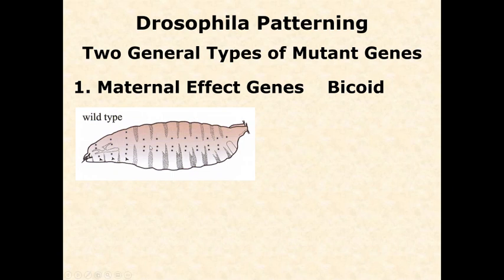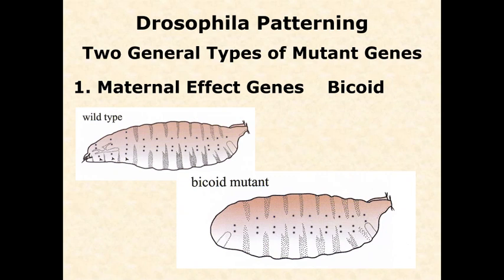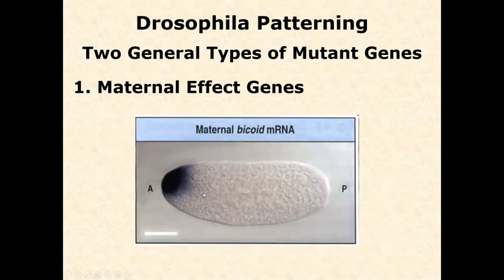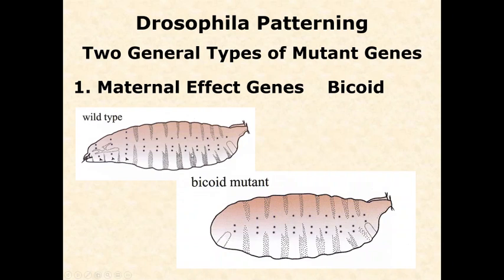If we mutate Bicoid — and this was done originally just by happenstance, they lucked into finding them — what they found was that early developing embryos grew no head at all. This is the genetic equivalent of those early experiments where they were ablating cells. If you were to ablate the cells at the very anterior region of the egg, you would get a very similar phenotype where head features do not develop. This end looks more like a tail, like a posterior region, than like a head — we're basically missing a head in the Bicoid mutant.